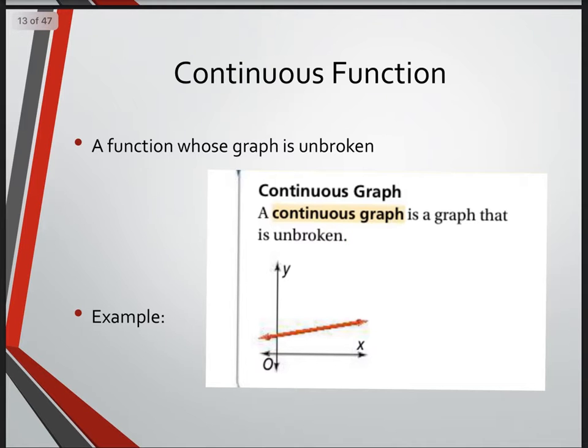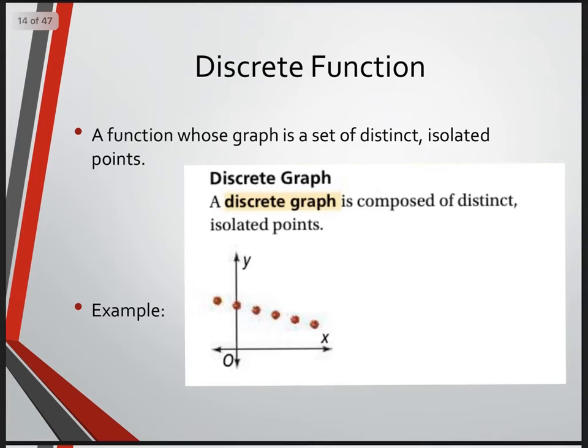The opposite of that will be discrete. A discrete function is a function whose graph is a set of distinct, isolated points. A discrete graph is composed of distinct, isolated points, so dots.